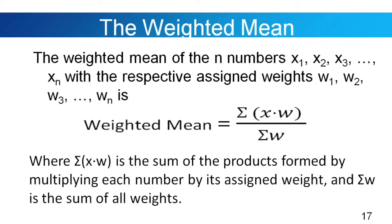Weighted mean. The weighted mean of n numbers x₁, x₂, x₃, ... xₙ with respective assigned weights w₁, w₂, w₃, ... wₙ is equal to the summation of the product of x and w, all over the summation of w — where Σ(xw) is the sum of products of each number and its weight, and Σw is the sum of all the weights.